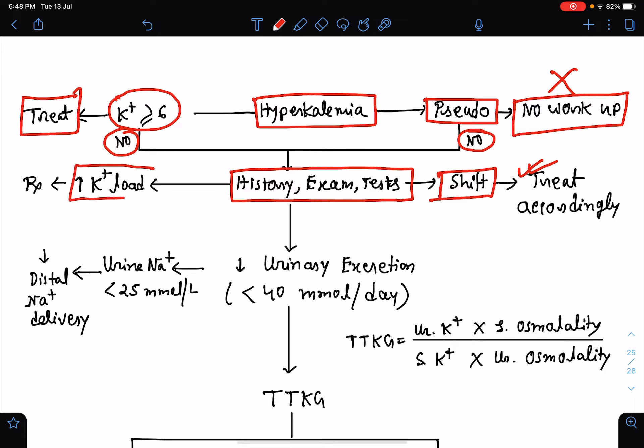If we think it is because of increased potassium load, which is rare to cause sustained hyperkalemia, we will treat the patient accordingly. If there is no evidence of transcellular shift or increased potassium load, that hyperkalemia may be due to reduced urinary excretion of potassium. If we measure the 24-hour urinary potassium and it is below 40 millimole per day, that means there is reduced urinary excretion. If we measure the urinary sodium and it is below 25 millimole per liter, that means there is reduced distal sodium delivery, which is leading to hyperkalemia.